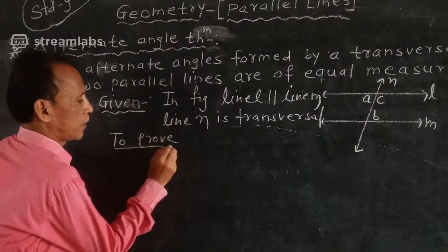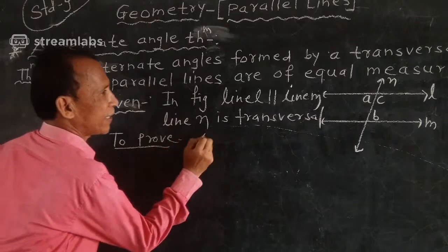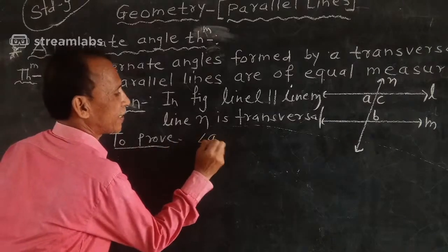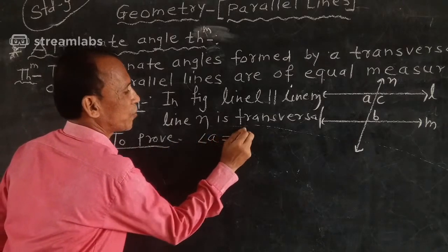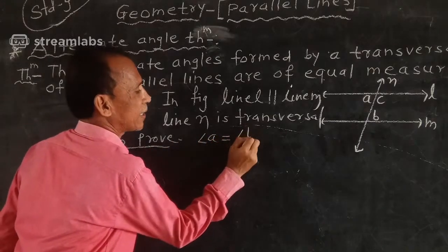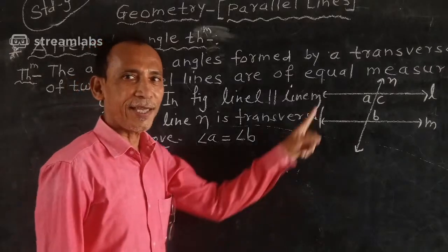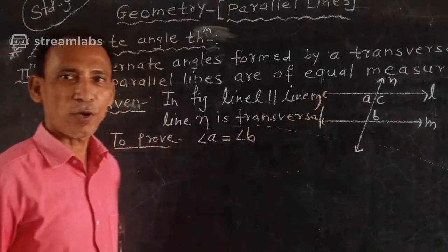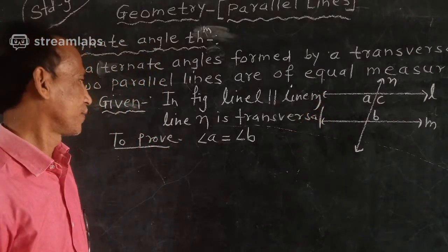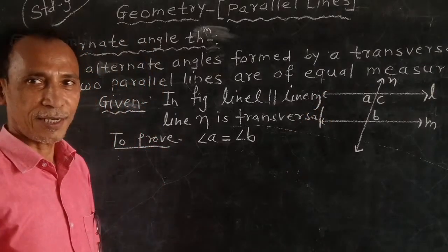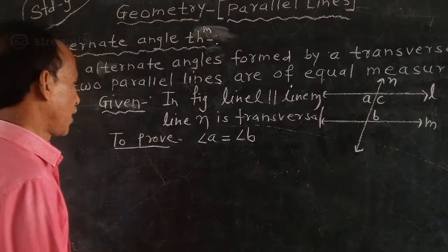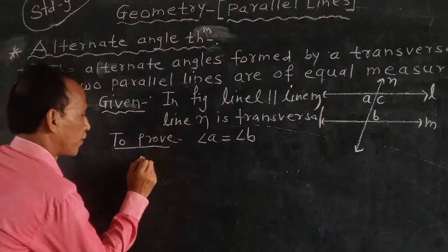We need to prove that angle A is equal to angle B. Understand? Now let's prove it.